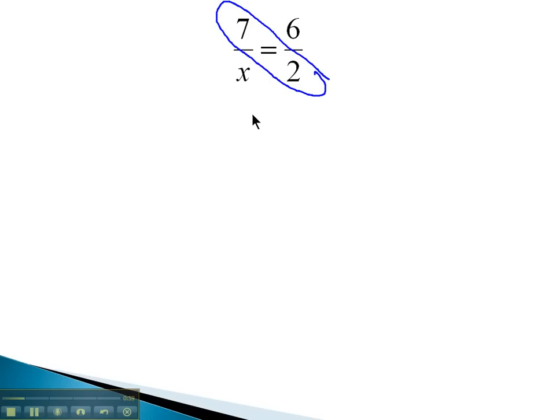7 times 2 is 14, and the other diagonal, 6 times x, is 6x. Because this is a proportion, we know those are equal, and we can solve this problem then by getting x alone simply by dividing both sides by 6. Once we do, we end up with x is equal to 14 divided by 6, which is approximately 2.33.